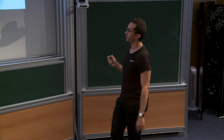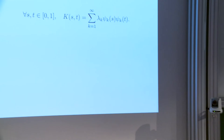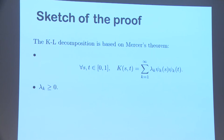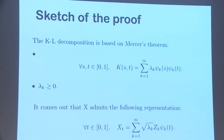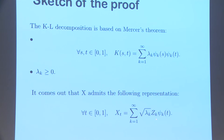Here's the idea of the proof. Mercer's theorem tells us the kernel decomposes with positive eigenvalues. Take the square root of the eigenvalues — since they're positive this is valid — multiply by independent Gaussian variables, and construct this series. The covariance of this series is exactly K(s,t). This is very useful for simulation: if you know the KL decomposition, just pick independent Gaussian variables, multiply by the KL basis, and you get exactly the correct covariance structure.